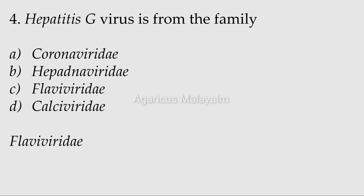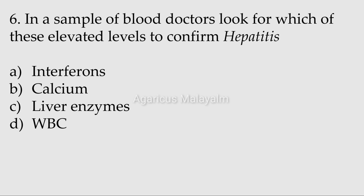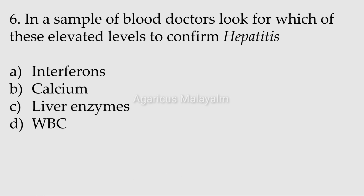Which organ is majorly affected by hepatitis? Answer options: option A, liver; option B, heart; option C, kidney; option D, brain. Sixth question: in a sample of blood, doctors look for which of these elevated levels to confirm hepatitis? Answer options: option A, interferons; option B, calcium; option C, liver enzymes; option D, WBC.